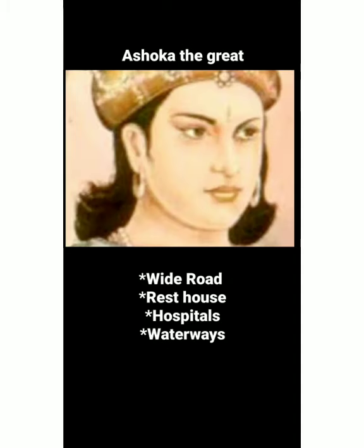Ashoka the Great built different facilities for the people, like wide roads with planted trees, rest houses and wells along the road for travelers. Different hospitals were built not only for people but also for animals. Waterways, canals, and irrigation were also built for the transport system.